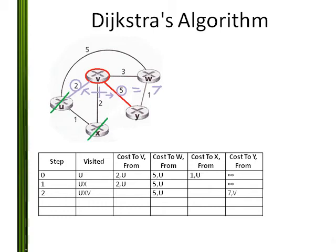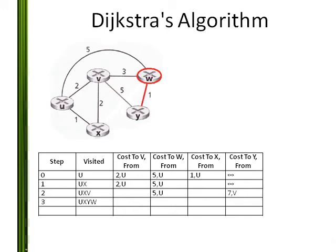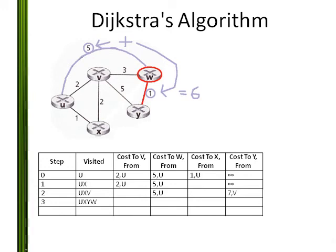I go to the cheapest node that I have not yet visited: W. I mark that I have visited W. I consider all nodes that I have not yet visited from W. To get to neighbor Y, I must add the old cheapest cost to my node W, which is 5 from U, and the cost to my neighbor Y, which is 1. This gives 6. Is this less than the previous cost to Y, which was 7 from V? Yes, it is. Update the cost, and mark that I can get to Y from W.